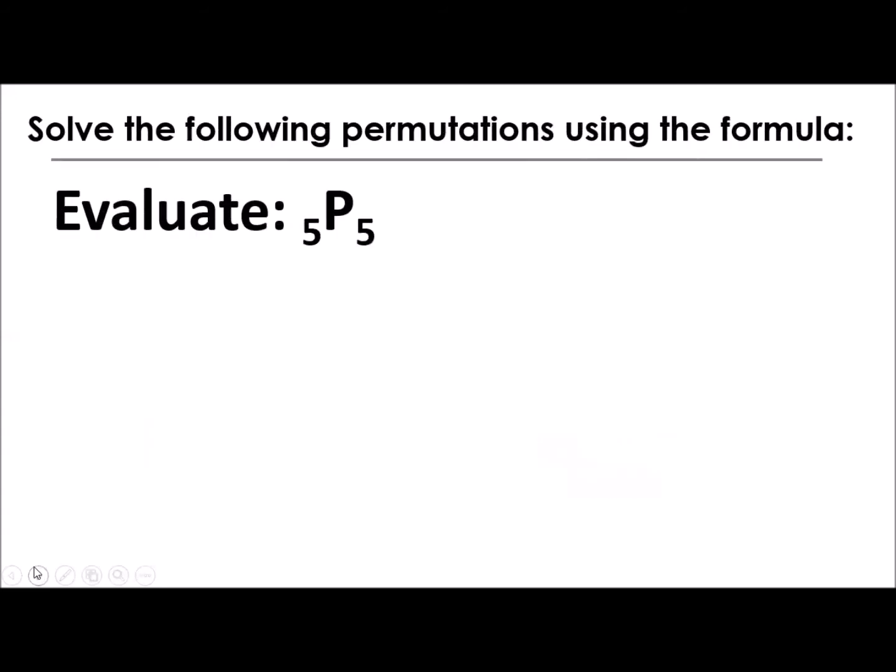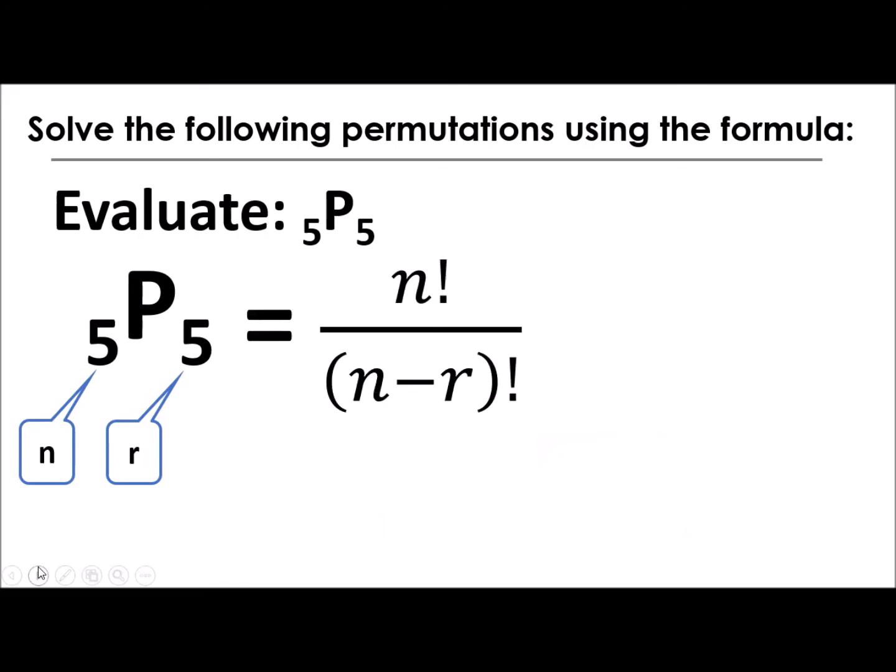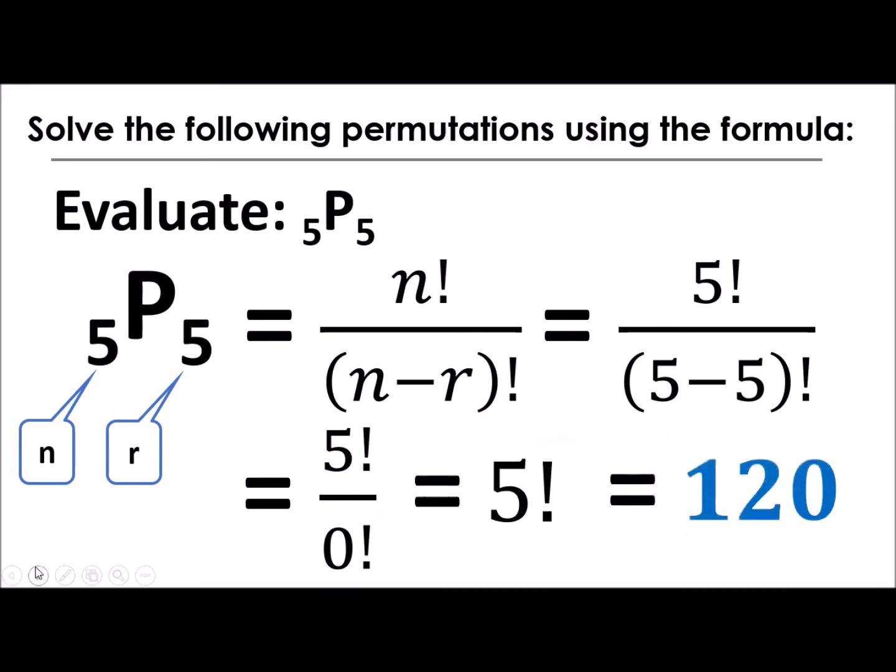I hope I've given you a clear picture of how to solve permutations using the formula. Let's try another one. Let's have permutation of 5 taken by 5. What's the value of n here? Very good. That is 5. How about r? Very good again. So we have similar values for n and r. And that's okay. So applying now the formula, substitute the values of n and r. We will have 5 factorial divided by 5 minus 5 factorial. And 5 minus 5, we all know that that is 0 factorial. And recall that 0 factorial is equal to 1. So which means we will just have 5 factorial, or that is 120.